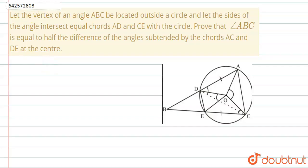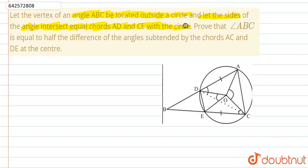Hello students. In this question it is given: let the vertex of an angle ABC be located outside a circle. Let the sides of the angle intersect equal chords AD and CE with the circle. We need to prove that angle ABC is equal to half the difference of the angles subtended by the chords AC and DE at the center.